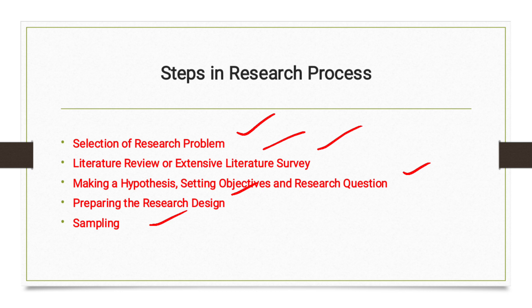The fifth step is sampling. The researcher must design a sample. A sample is a collection of sampling units drawn from a sampling frame, or alternatively, a number of individual cases drawn from a larger population. For example, if there are 1,000 students, those 1,000 students are the population, but selecting 50, 100, or 500 students from them constitutes a sample. Sampling is a plan for selecting respondents from a specific area or universe.